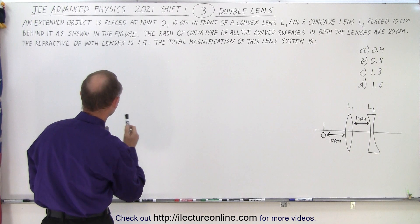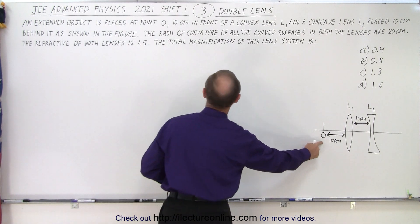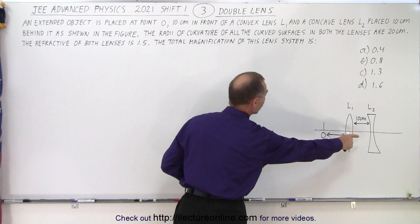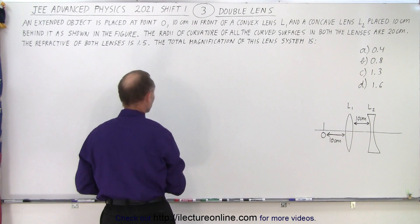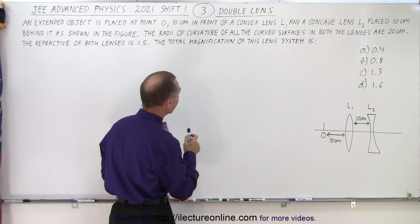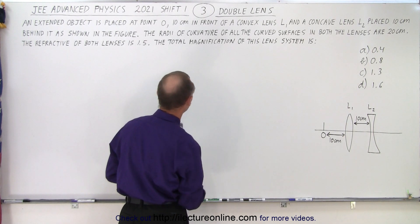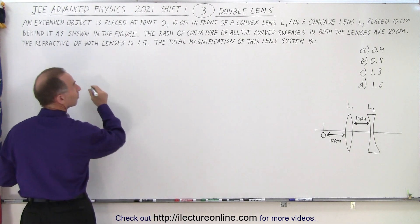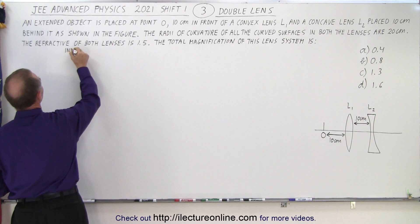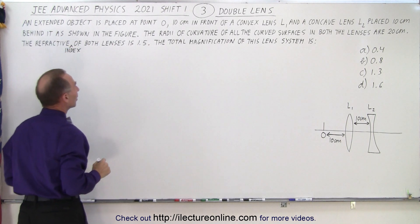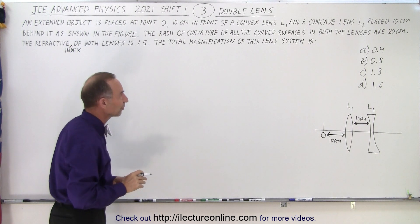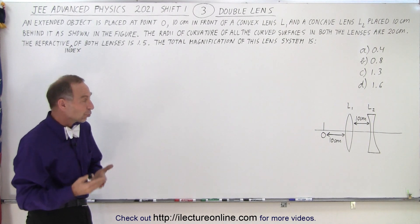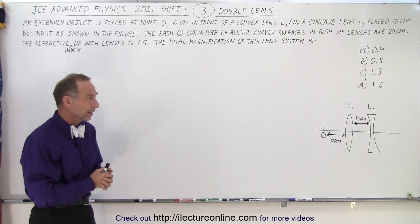An extended object is placed at point O, 10 centimeters in front of a convex lens L1, and a concave lens L2 which is placed 10 centimeters behind it as shown in the figure. The radii of curvature of all the curved surfaces in both lenses are 20 centimeters. The refractive index of both lenses is 1.5. The total magnification of this lens system is what we need to find — the total magnification of the final image relative to the original object.